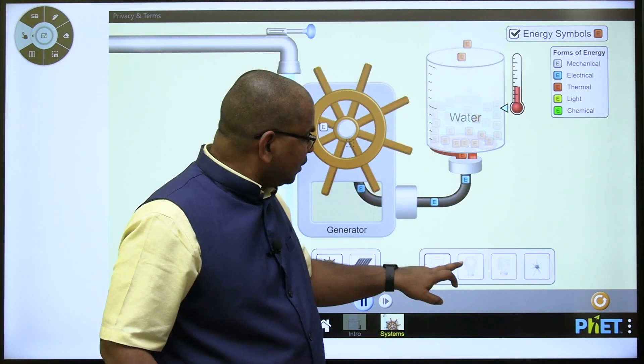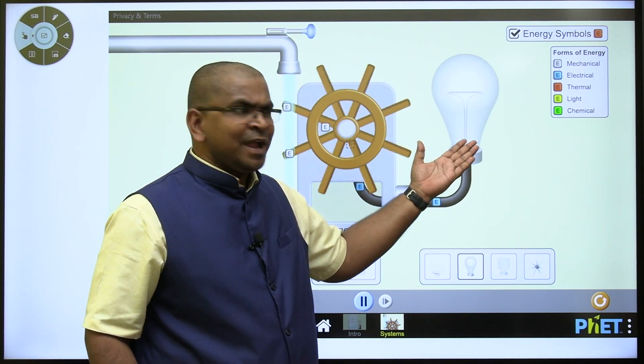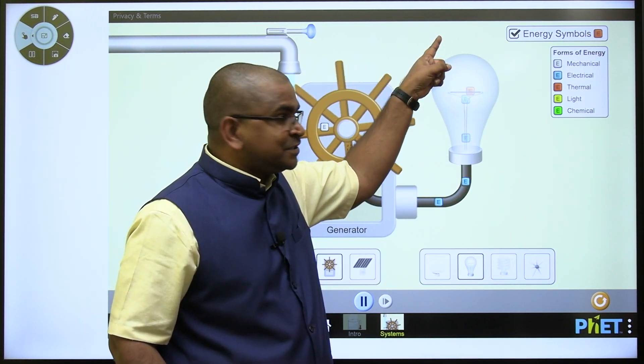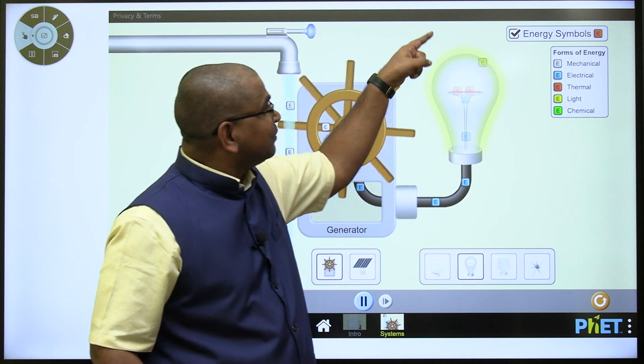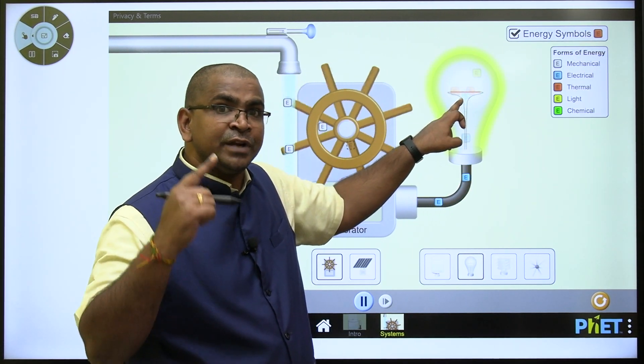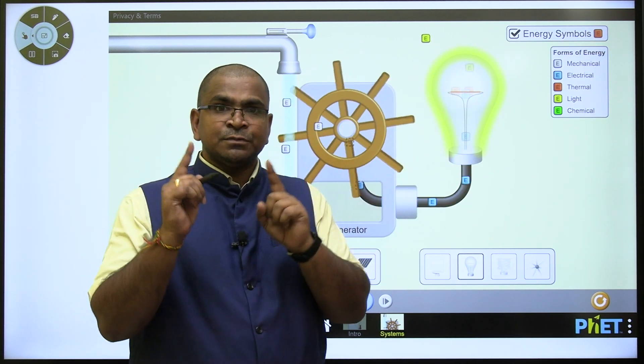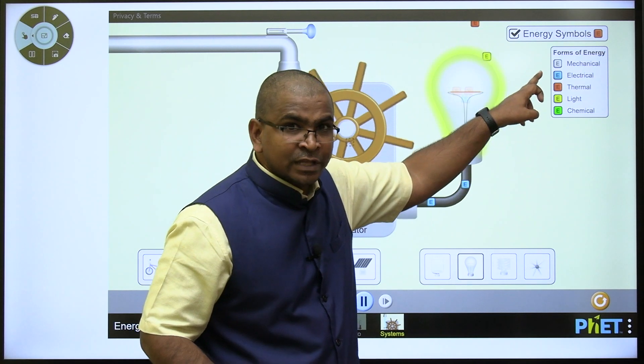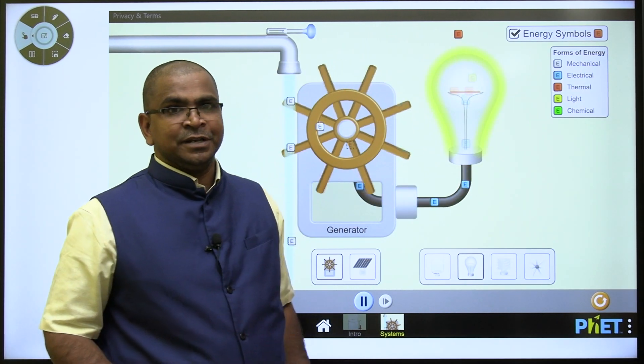Instead of this one here, you can give your bulb. And here the bulb is converting this electrical energy into light energy. The light energy symbol you see here finally. And inside that filament, some amount of heat energy will also come. So these bulbs will generate or convert electrical energy into both thermal energy and light energy.